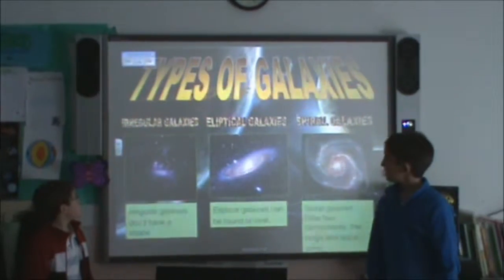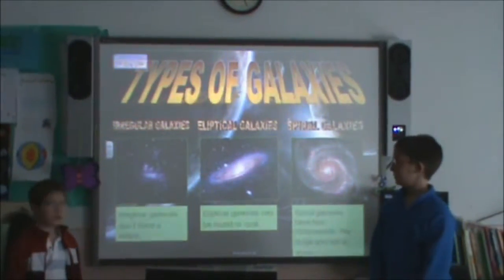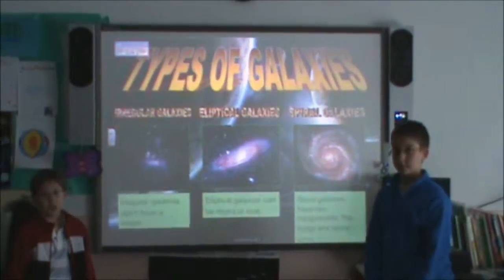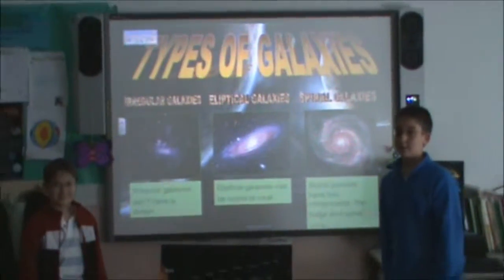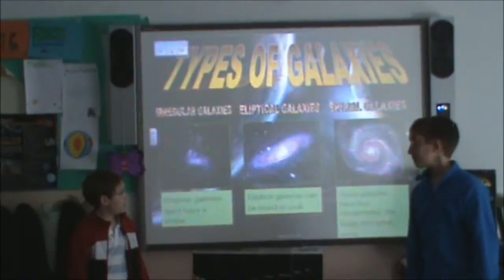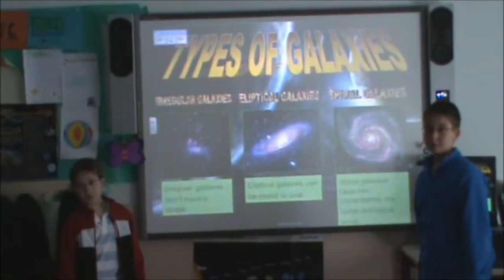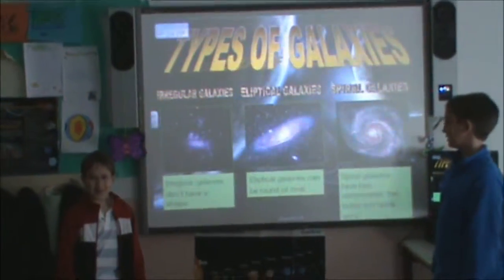Irregular galaxies don't have a defined shape. Elliptical galaxies can be round or oval. Spiral galaxies have two components: the bulge and spiral arms.